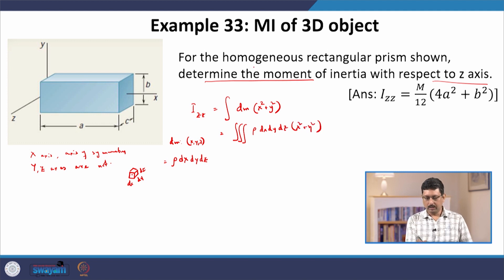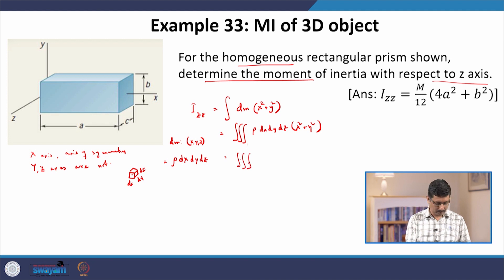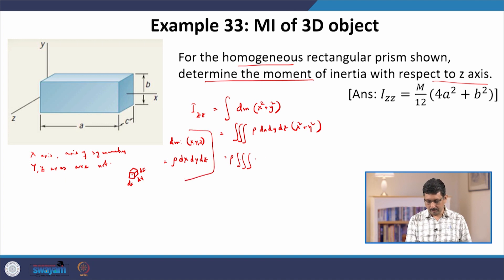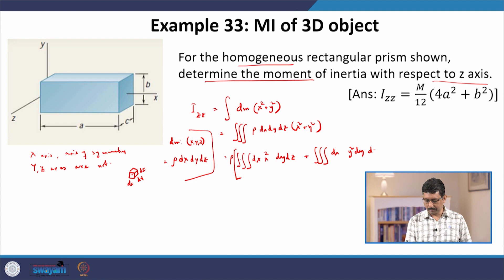Now, because it is homogeneous, I can take the density rho outside the integral. There are two terms: the first term is x squared dx times dy dz, and the second term is y squared dy times dx dz.